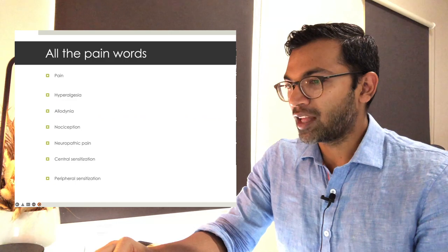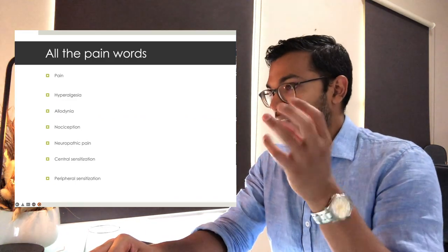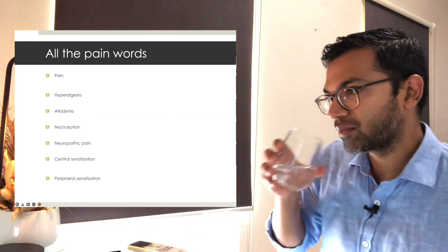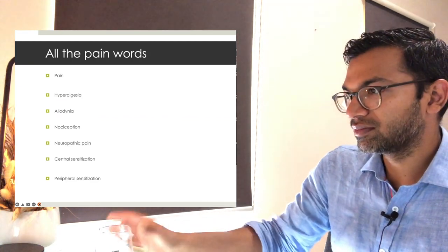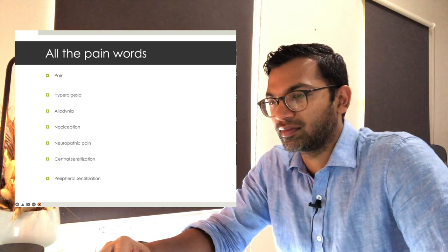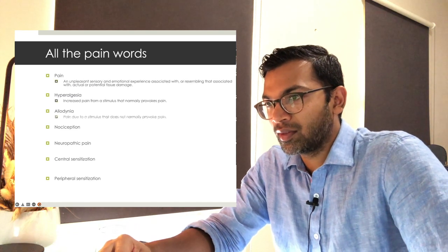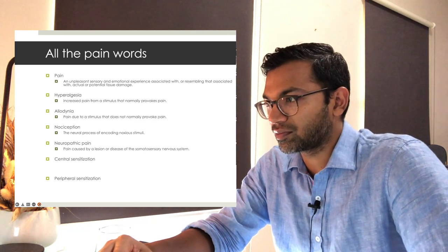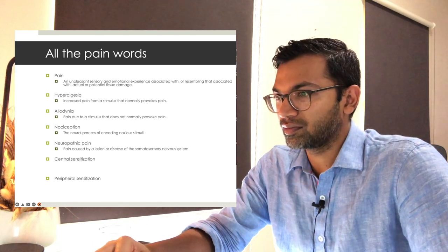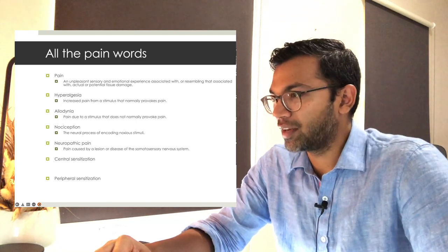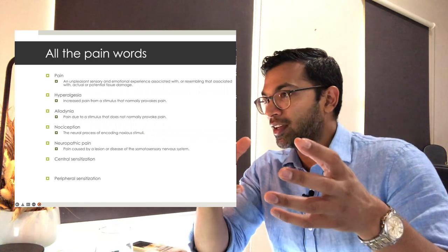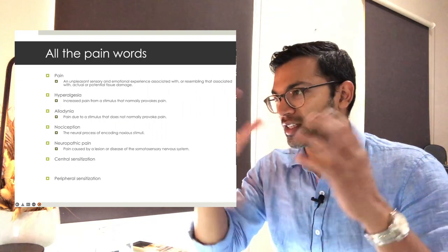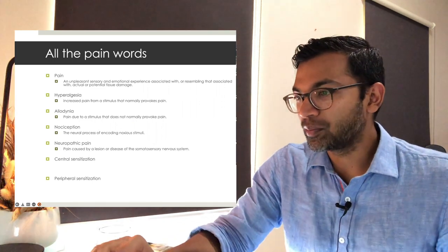Neuropathic pain arises from the nerves themselves — not from stimulation of nociceptive receptors but from the actual nerve fiber. It's not due to cytokines released when things are touched or cut; it's the nerve fiber itself. It's really horrible to have and very characteristic. You'll hear a lot about central and peripheral sensitization as well.